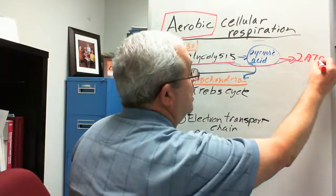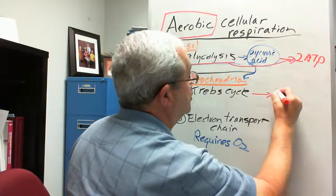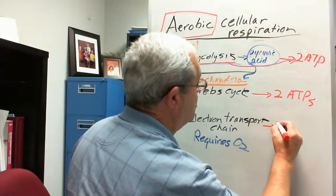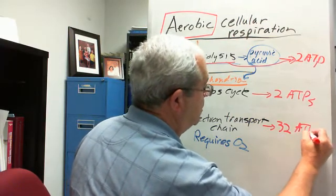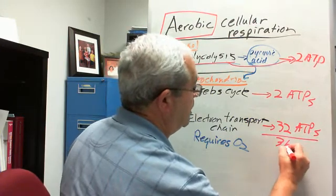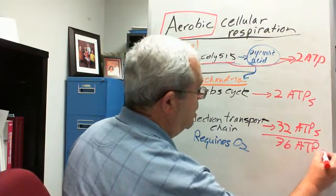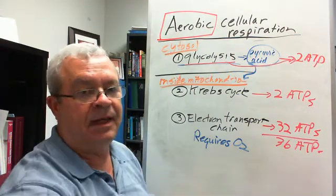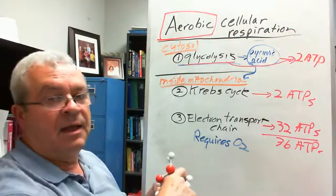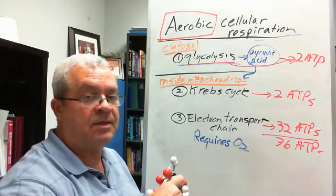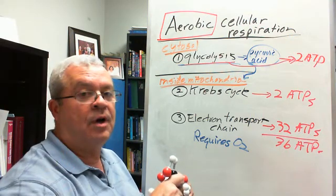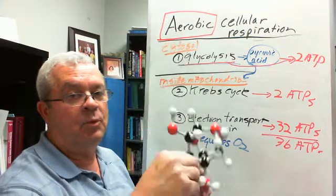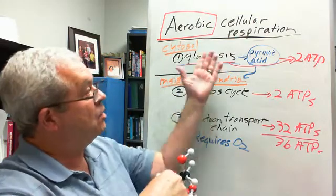Glycolysis charges up two ATPs, and the Krebs cycle charges up also two ATPs. Electron transport chain, a whopping 32 ATPs. And so a total of 36 ATPs. Is that enough to get us through a day? I don't think so. It's not even enough to get us through a blink of an eye. But how much glucose is processed to charge up 36 ATPs? A whopping one glucose molecule. Yes, a whopping one.